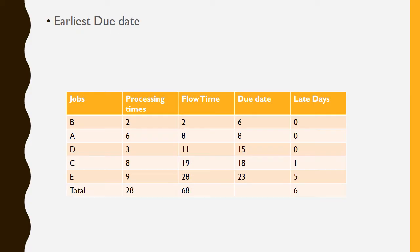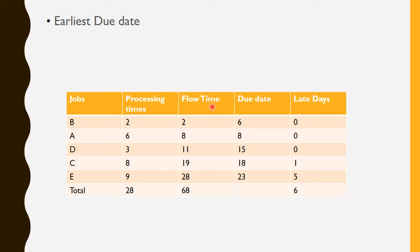Late days for EDD: B finishes day 2, due date 6 → 0. A finishes day 8, due date 8 → 0. D finishes day 11, due date 15 → 0. C finishes day 19, due date 18 → 19 − 18 = 1. E finishes day 28, due date 23 → 28 − 23 = 5. Totals: processing time = 28, flow time = 68, late days = 6.